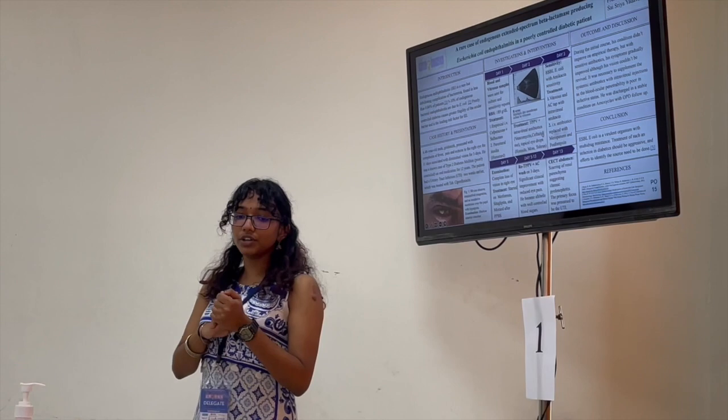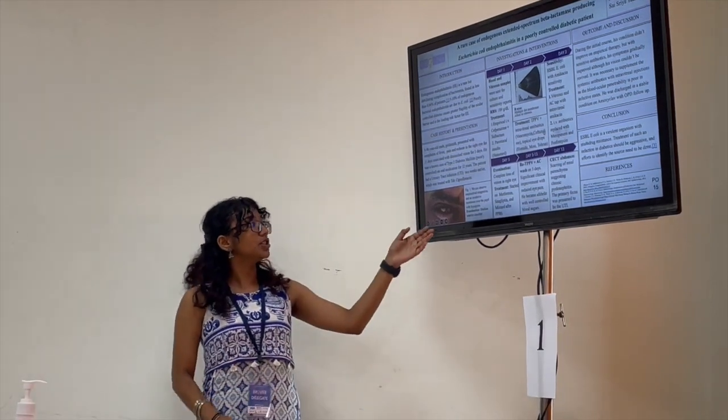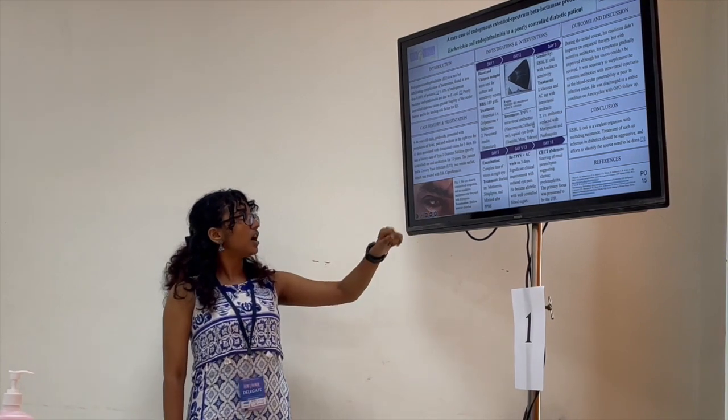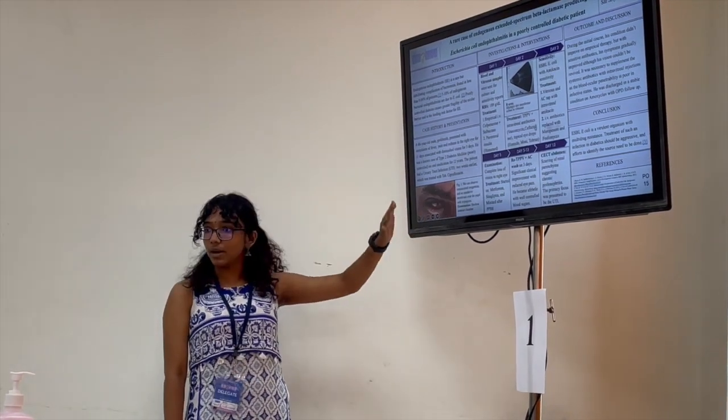Now for the findings, as you can see in this image, you can observe some ciliary congestion, which is diffuse in nature, along with hypopyon and an exudative membrane over the pupil.